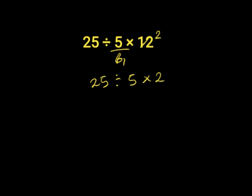Now we're going to walk from left to right. 25 divided by 5 gives us 5, and 5 times 2 gives us 10. 10 is the wrong answer to this question.